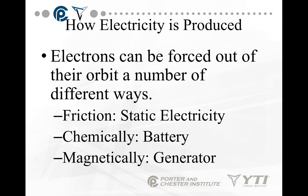Friction is static electricity. It's like petting the fur of a cat backwards in a very dry environment — you'll see little sparks. Rub your feet on a carpeted floor on a dry winter day and touch a doorknob — that's friction, static electricity. Your car battery and little AA batteries produce electricity chemically. It's a chemical reaction.